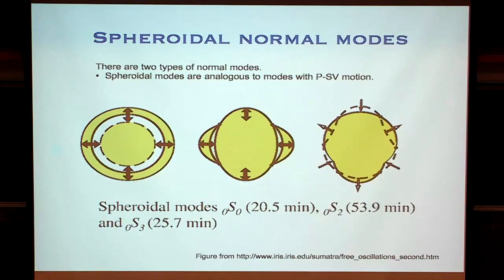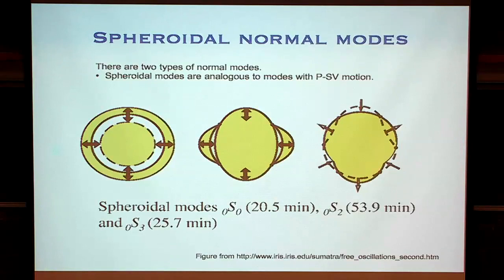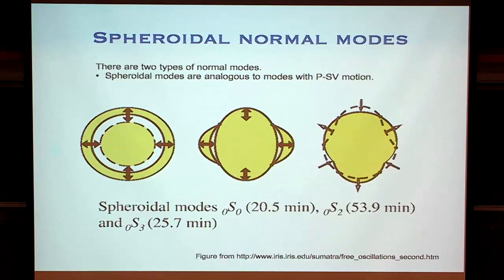The next mode is called the football mode — though if you're in England, you'd ask why it isn't called the rugby ball mode. You take your sphere: the poles go upwards and the equator goes inwards, going from something spherical to that shape. Then it relaxes too much — the poles come in and the equator bulges out. This mode actually has the lowest frequency of the normal modes we normally think about: it takes nearly an hour to complete the full expansion and contraction.